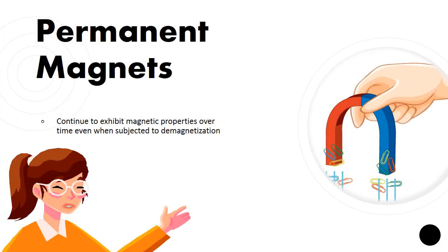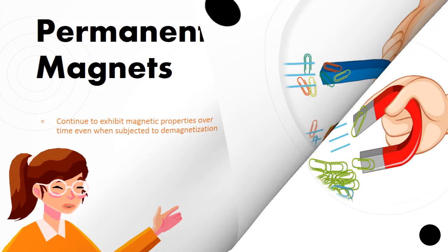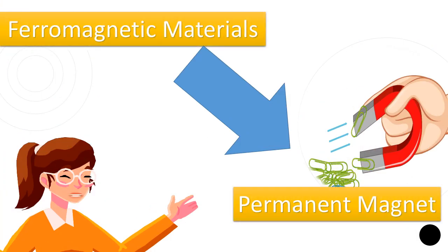A permanent magnet is a substance that continues to exhibit magnetic properties over time, even when subjected to demagnetizing processes. In addition to having a strong magnetic response, or being attracted to magnets in the same manner that iron is, ferromagnetic materials can also be magnetized, or converted into permanent magnets.